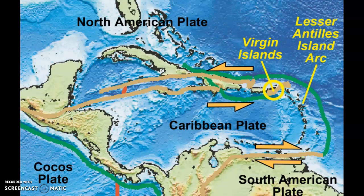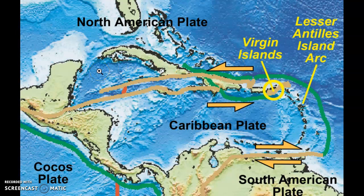This image shows two other examples of transform plate boundaries. Apart from the North American and Pacific plates, we also have the North American plate in the upper region interacting with the Caribbean plate. The Caribbean plate is actually moving in an easterly direction, whereas the North American plate is moving in a westerly direction. The South American plate and the Caribbean plate also form a transform plate boundary, where the Caribbean plate is moving easterly and the South American plate is moving to the west.